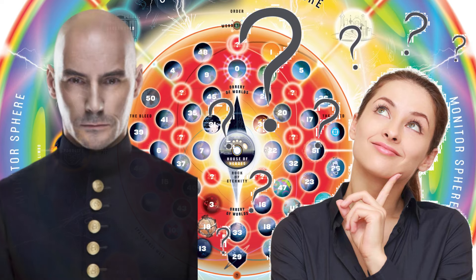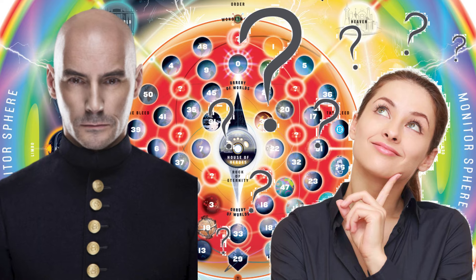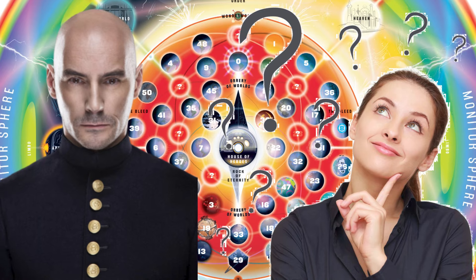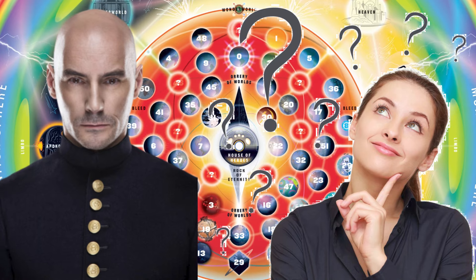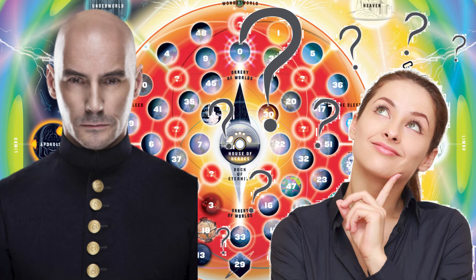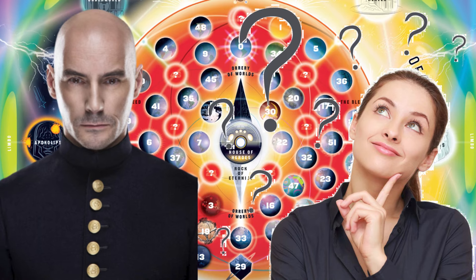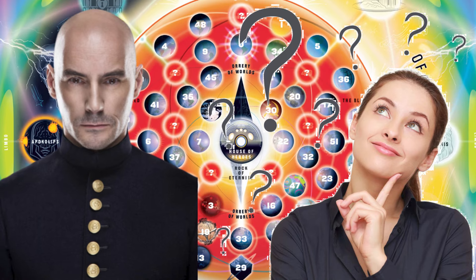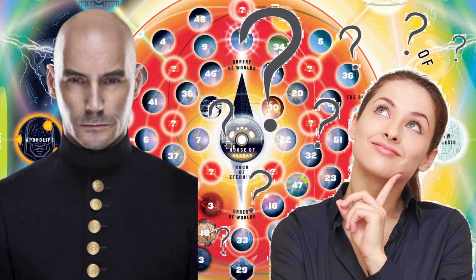Grant Morrison, the person who wrote the Map and is a notorious DC writer, was honestly pretty thorough whenever it came to his research, so there can't be too much missing from the Map of the Multiverse in the modern day, right?